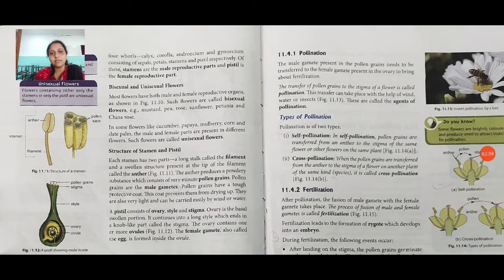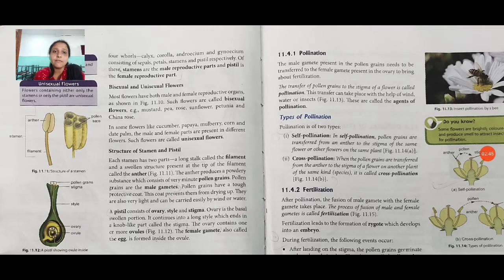The female gametes, also called the egg, are formed inside the ovule. You can see the structure available in the figure. Some flowers are bisexual and some are unisexual, but in both we can get gametes from male and from female.